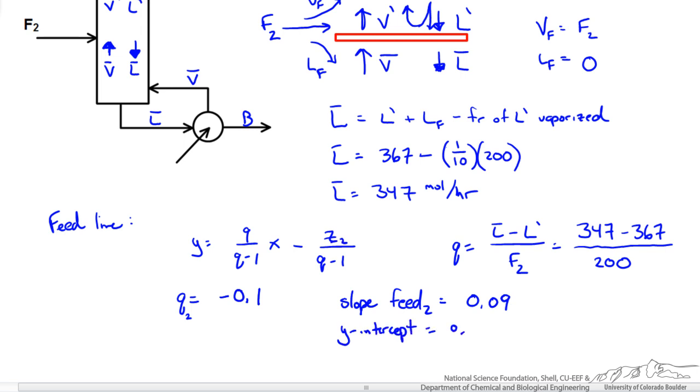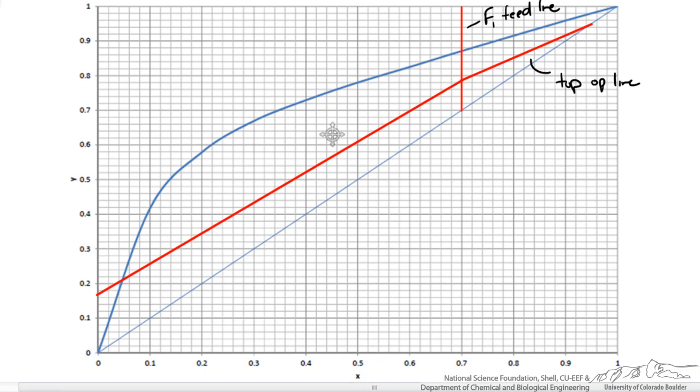And a y intercept plugging in our known feed composition of 0.36. So we know our second feed has a composition of 0.4 so we start at the x equals y line. We know our y intercept is 0.364 so we can draw our second feed. This is our operating line for our second feed.